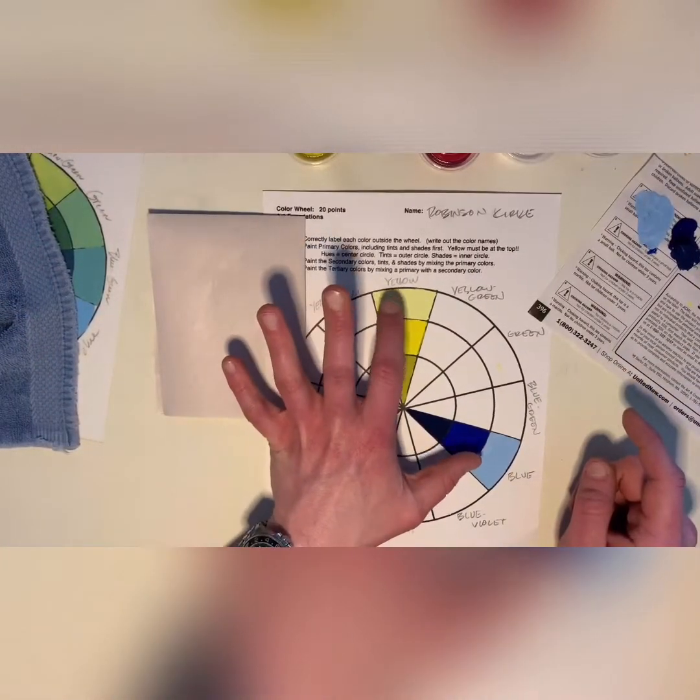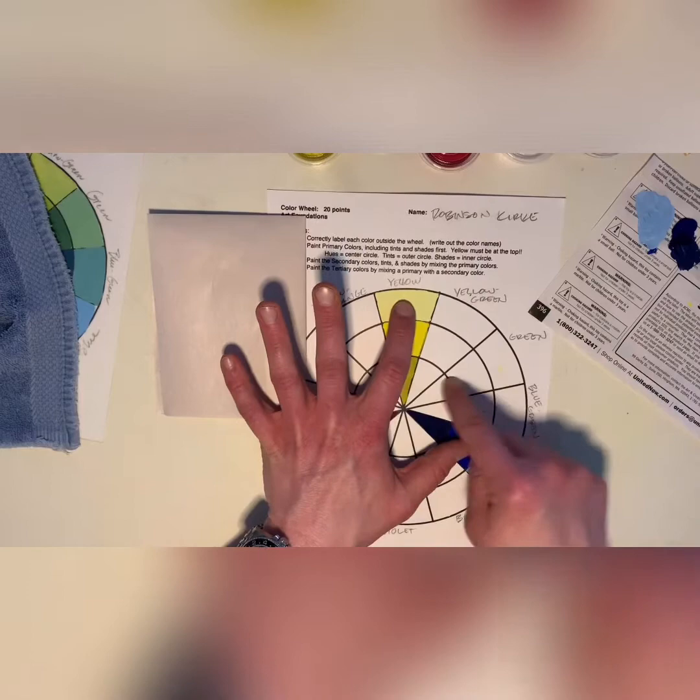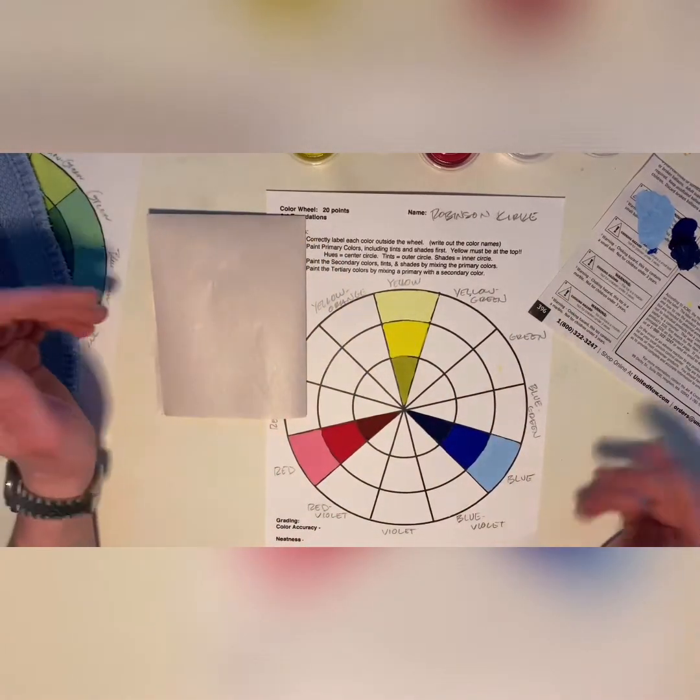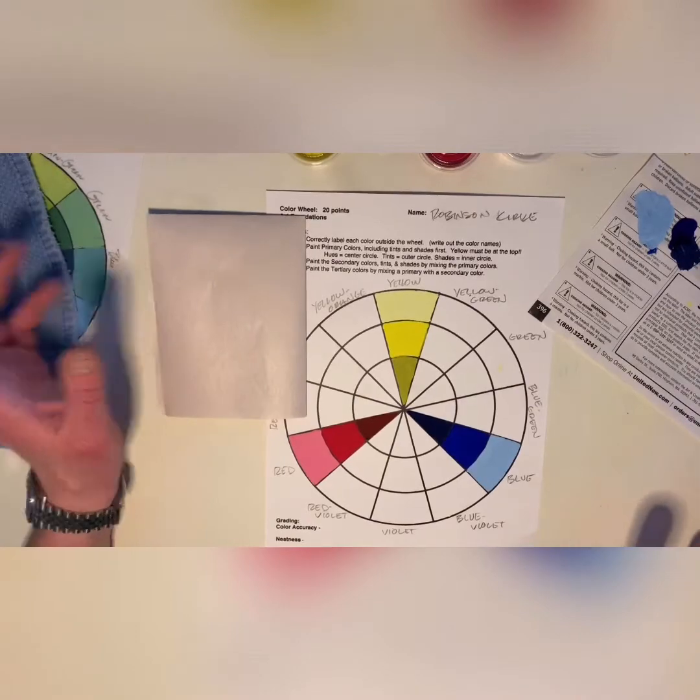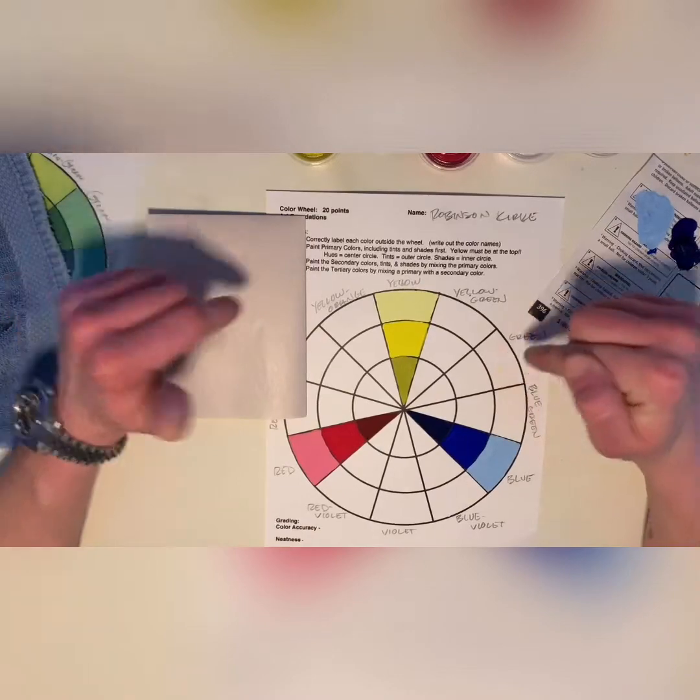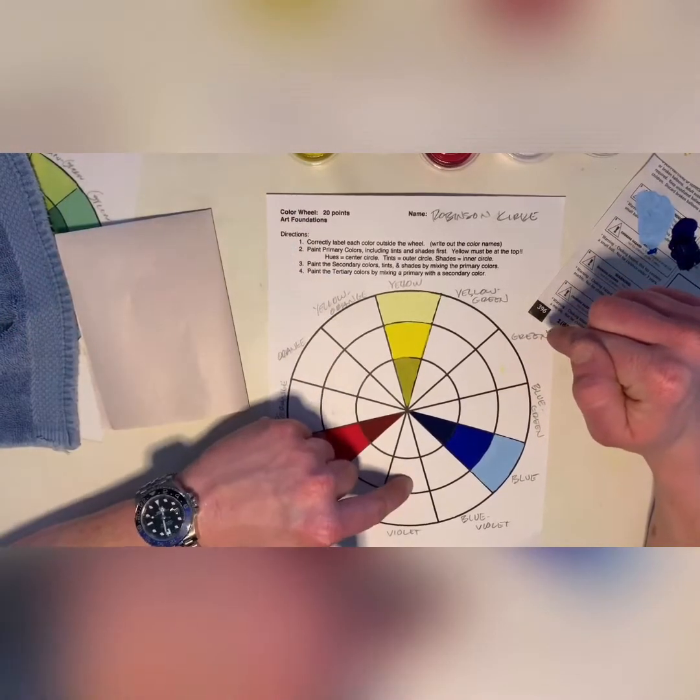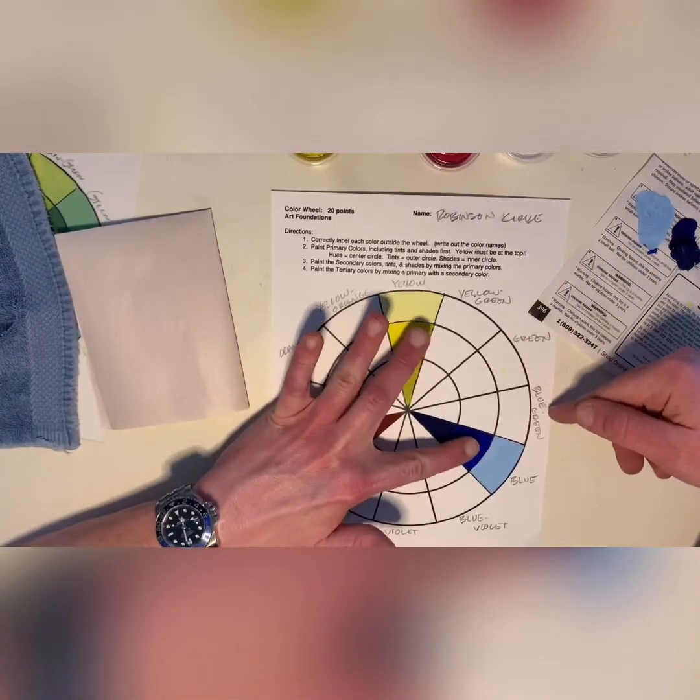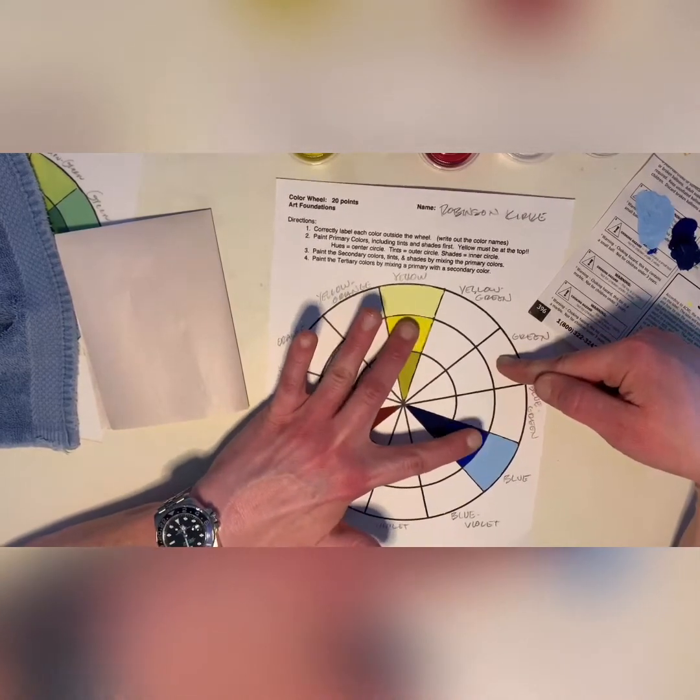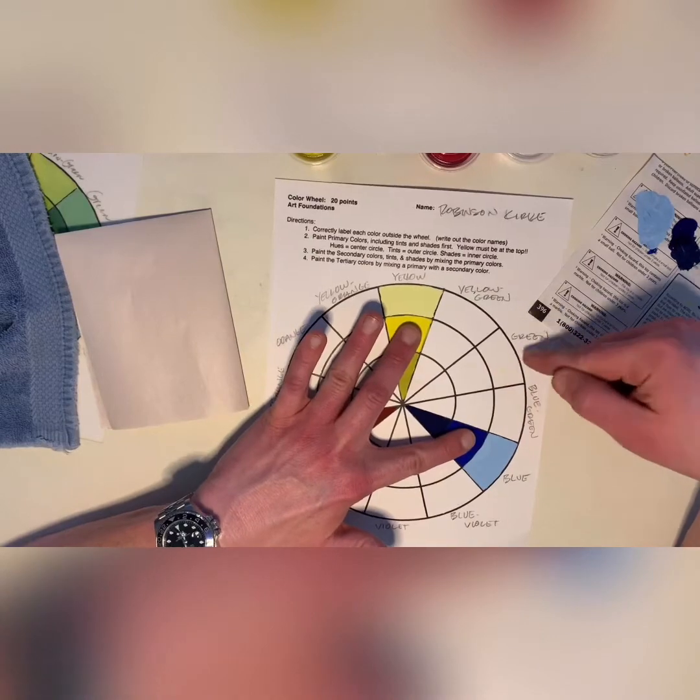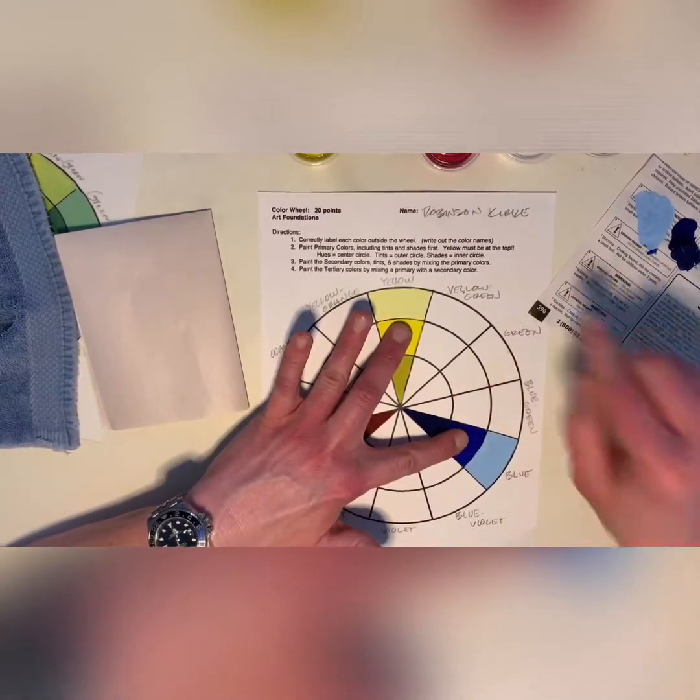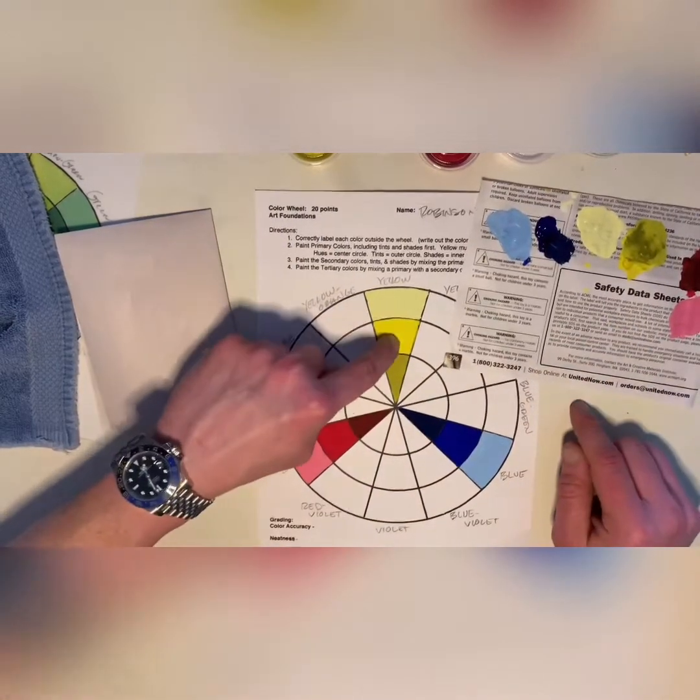Between yellow and blue, we've got green. If you're ever looking at colors, and maybe you're in a painting project later on in the semester, and you can't remember how to mix to get green or orange or your violet, if you take a look at the two primary colors that sandwich that color, meaning they're both outside left and outside right, that's going to tell you which two primaries are needed to mix to get that secondary. So, knowing that I need yellow and I need blue...